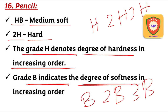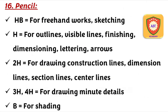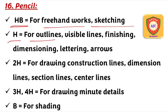H grade indicates degree of hardness and B grade indicates degree of softness. HB pencils are used for freehand work and sketching. H pencils are used for outlines, visible lines, finishing lines, dimensioning, lettering, and arrows.